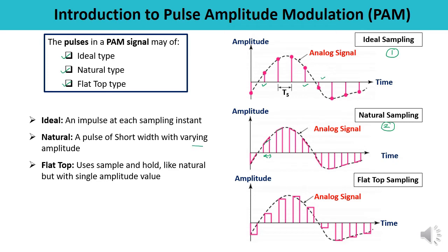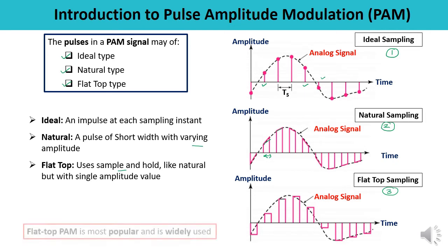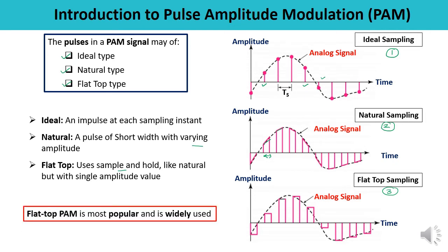In the third case — flat top sampling — you can observe that the top of the pulse is flat, which is why it is known as flat top sampling. This flat top is obtained by using a circuit known as sample and hold. Flat top pulse amplitude modulation is very popular and widely used.